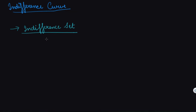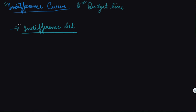The next topic in this chapter is the indifference curve. You have to find out the indifference curve and budget line in order to understand consumer equilibrium in the case of ordinal analysis. We need to understand both of these. In this video, I will be covering all the aspects of the indifference curve.